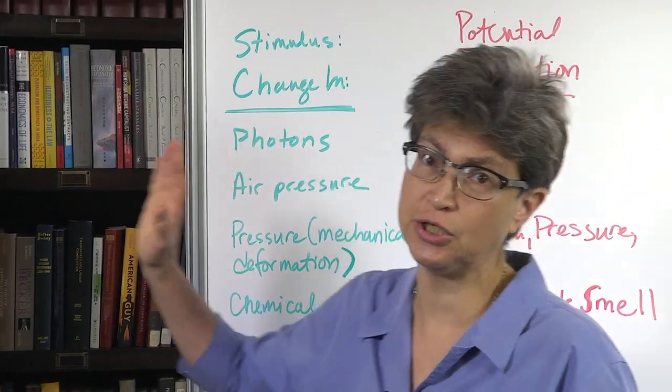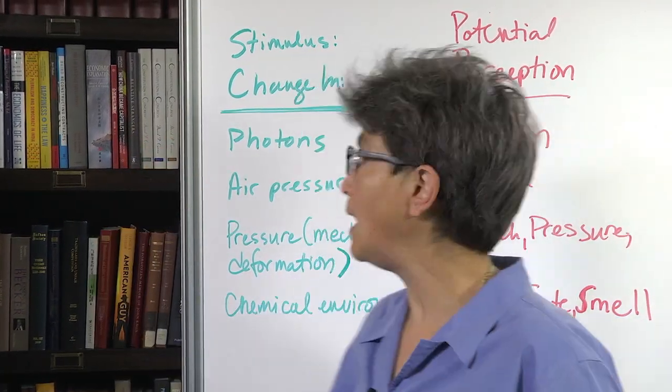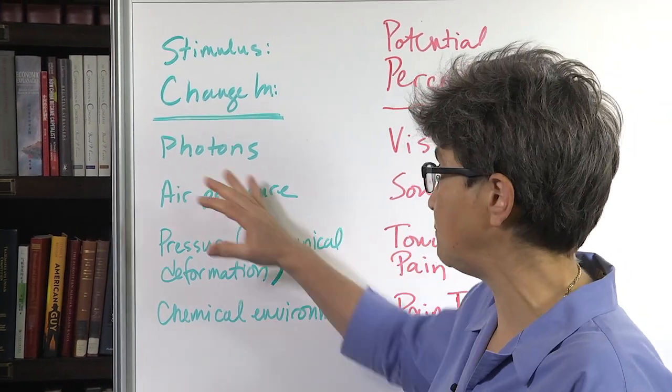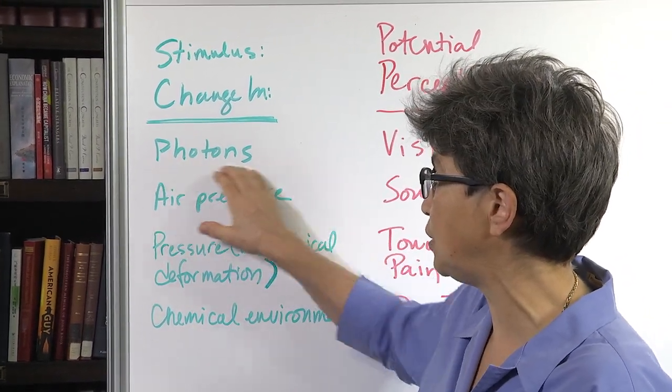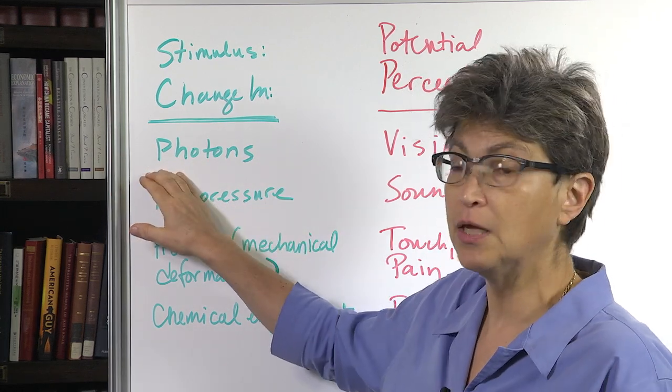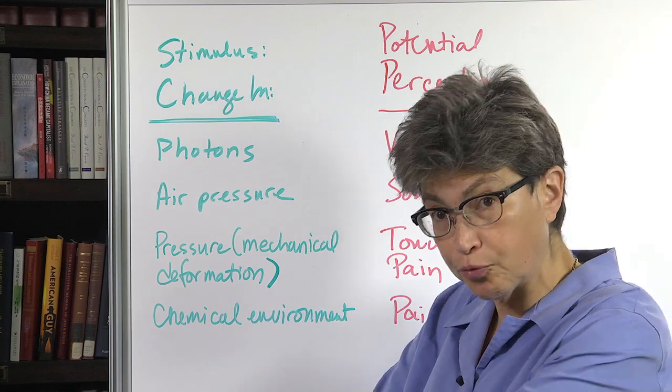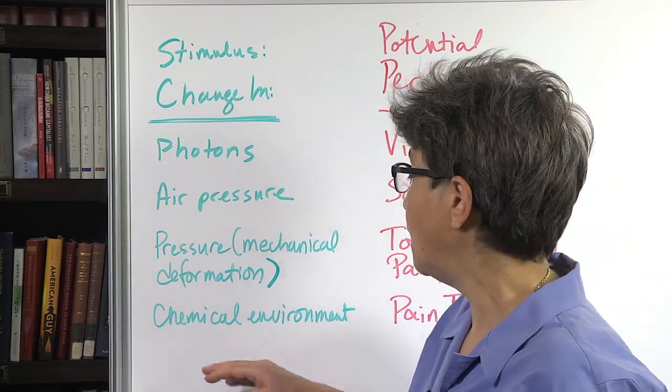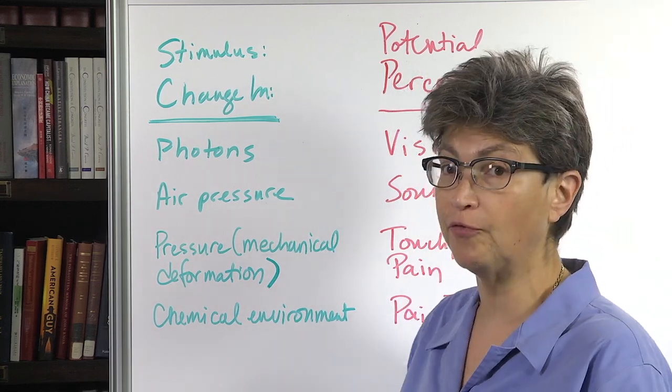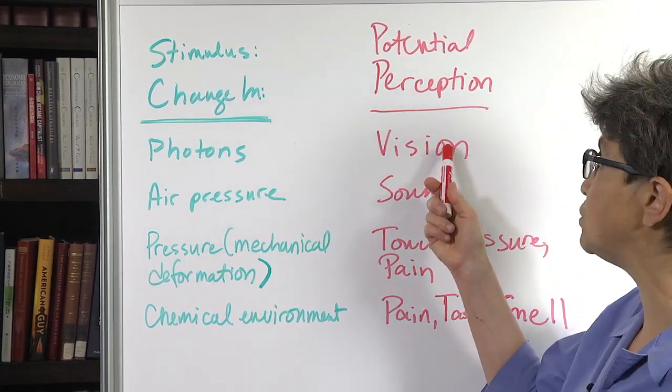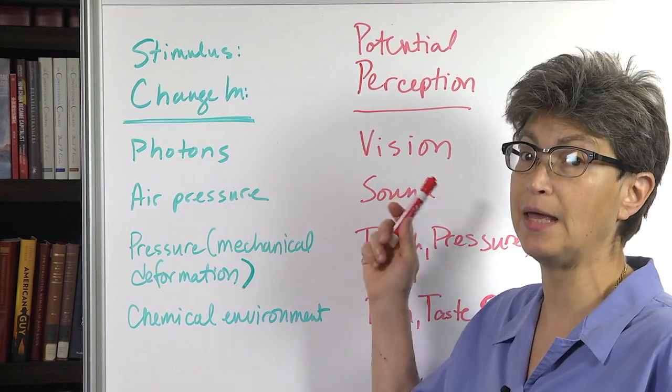So a stimulus is a change in some property. And I've listed a few of the major types of changes that we can have. We can have a change in the photons. We can have change in air pressure. We can have change in mechanical pressure on the body. We can have a change in the chemical environment. And each of these stimuli produces, can produce a perception.